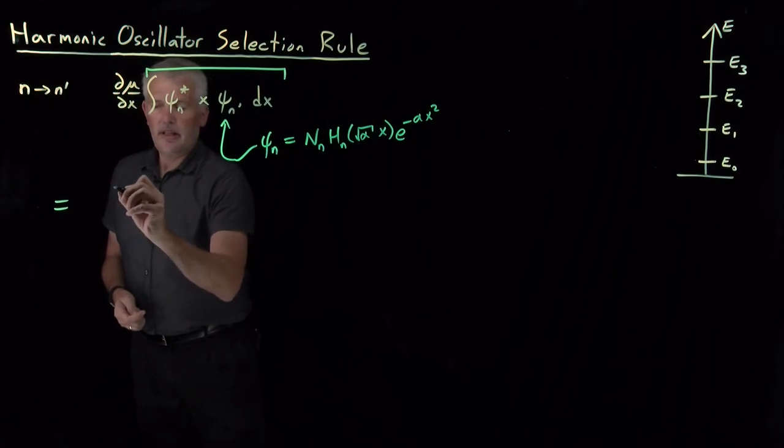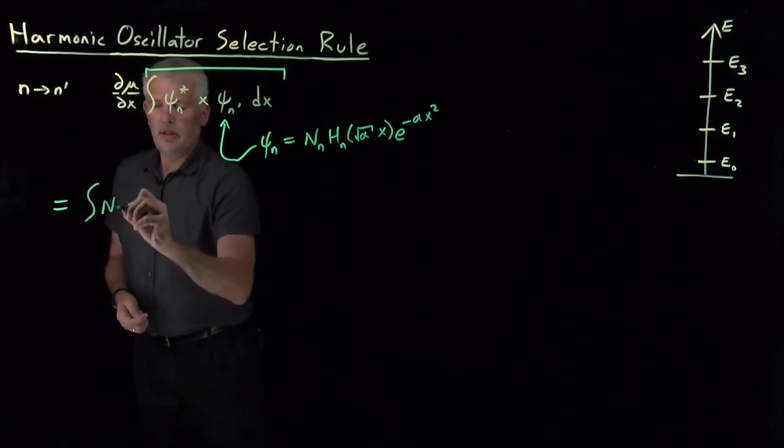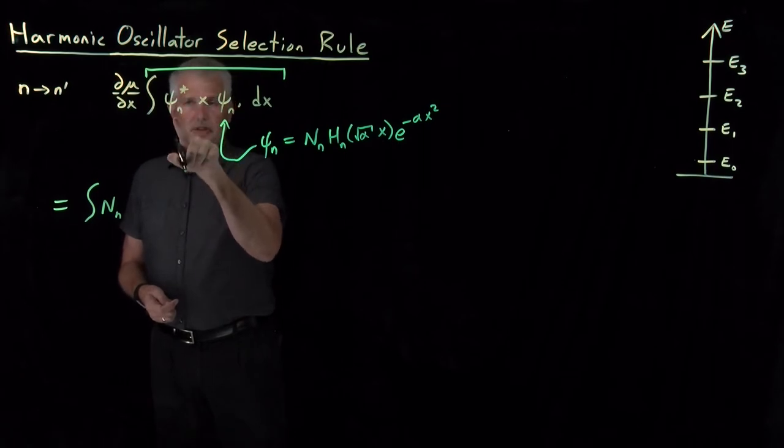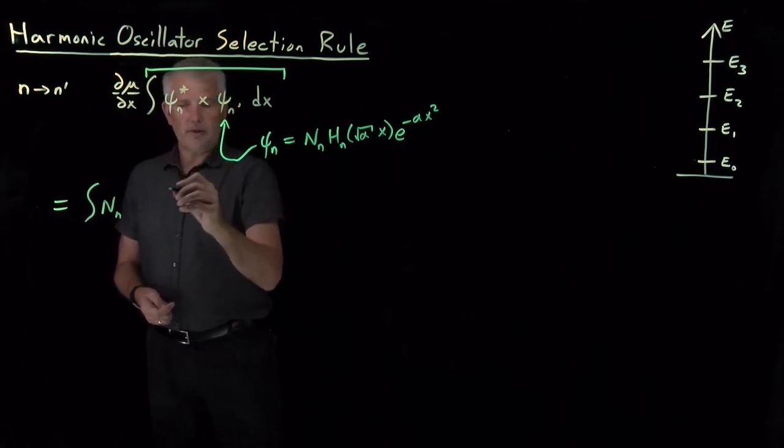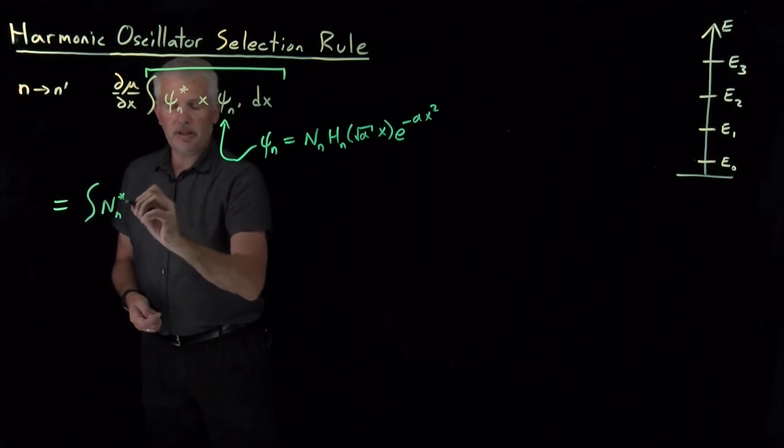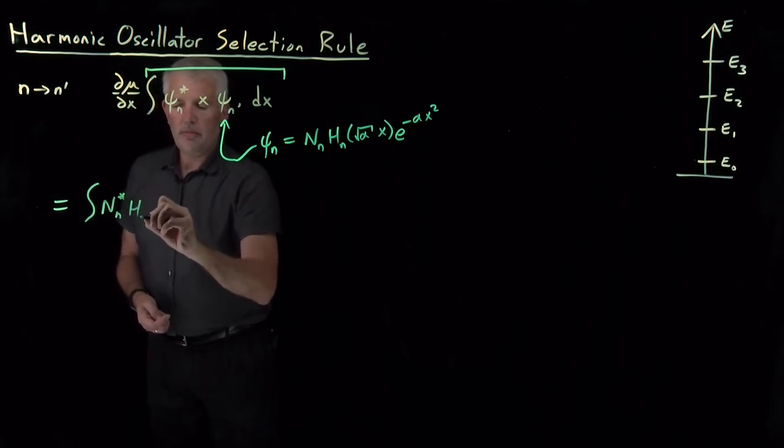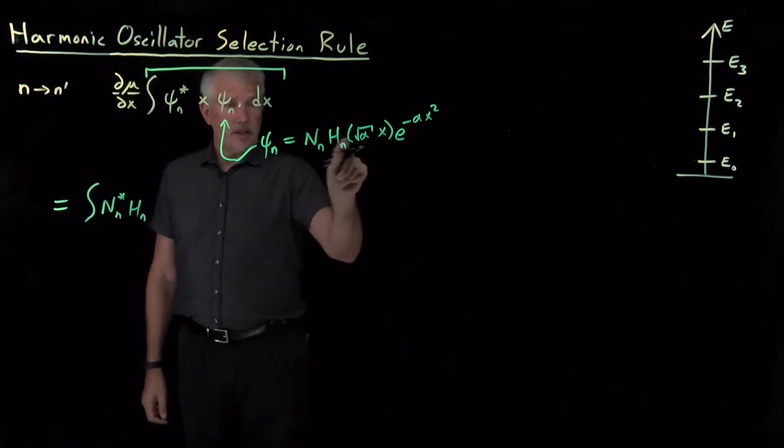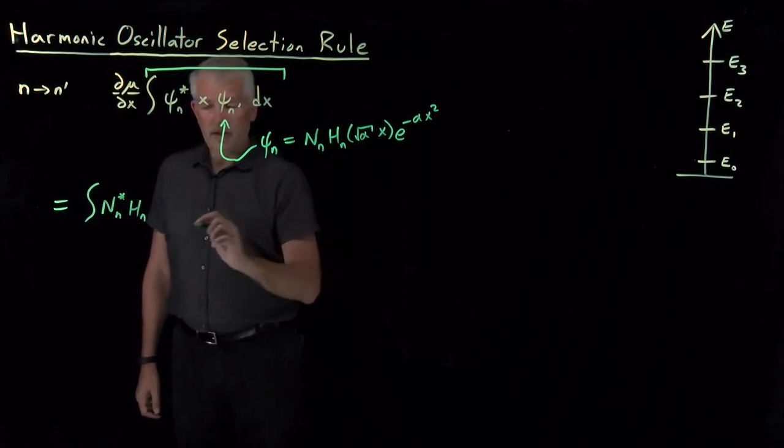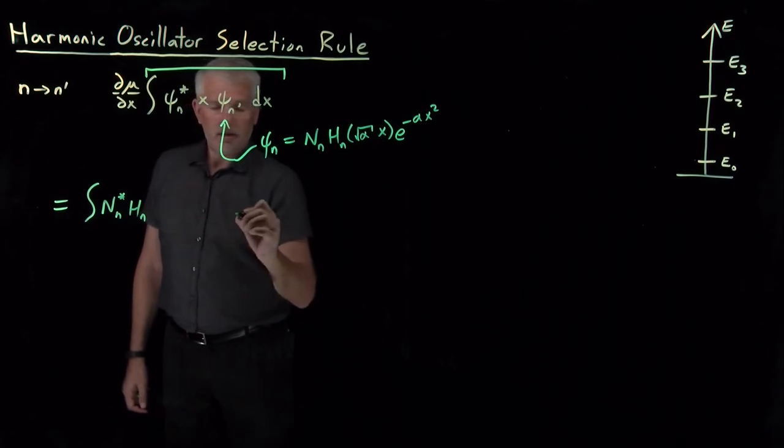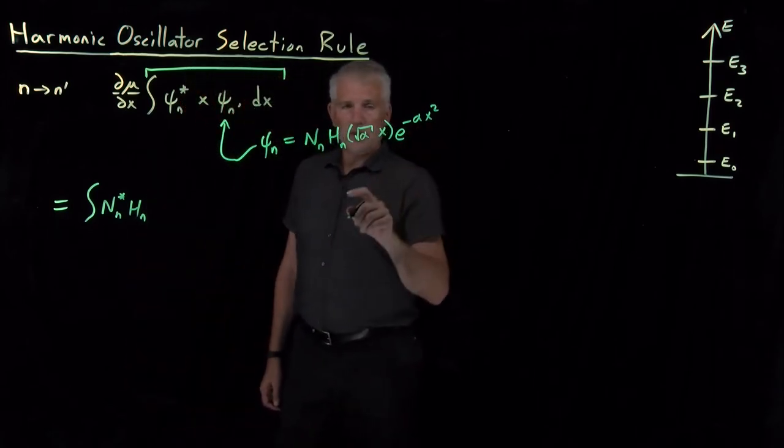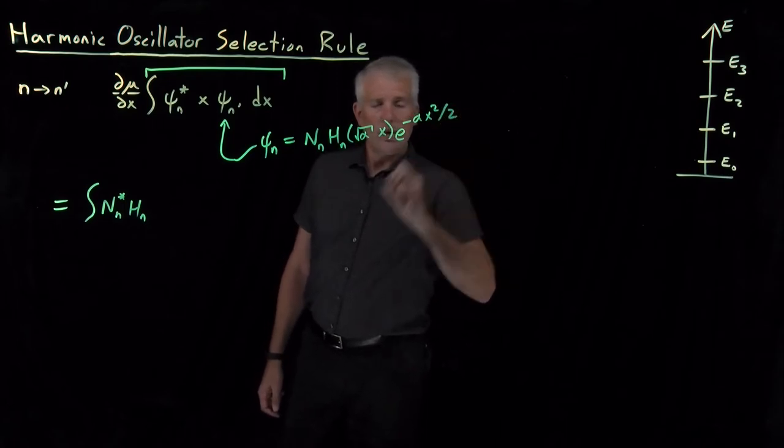The integral of writing the complex conjugate of the n-th wave function first. I've got N sub n complex conjugated Hermite polynomial. I don't have to worry about the complex conjugate because these are not imaginary, those are real. So there's an H_n term and there's an e to the minus alpha x squared over 2.